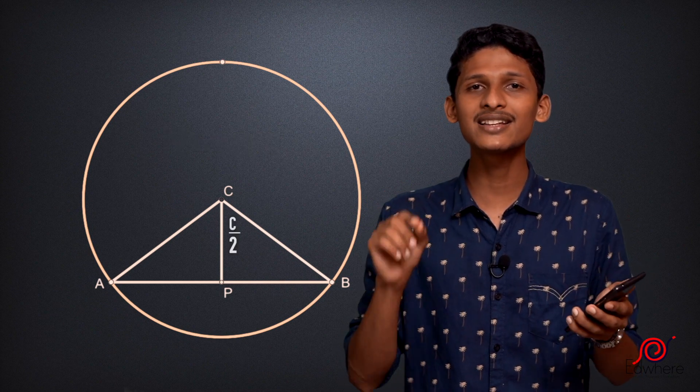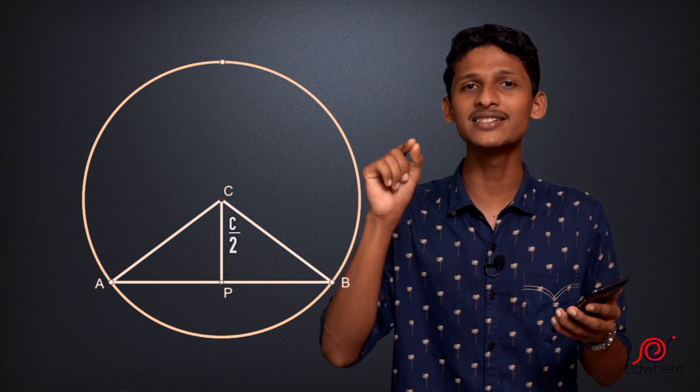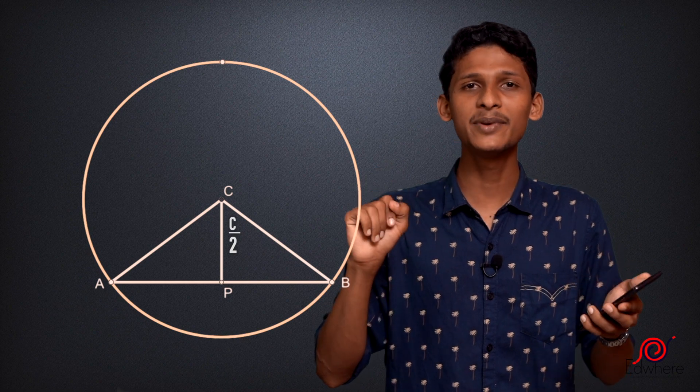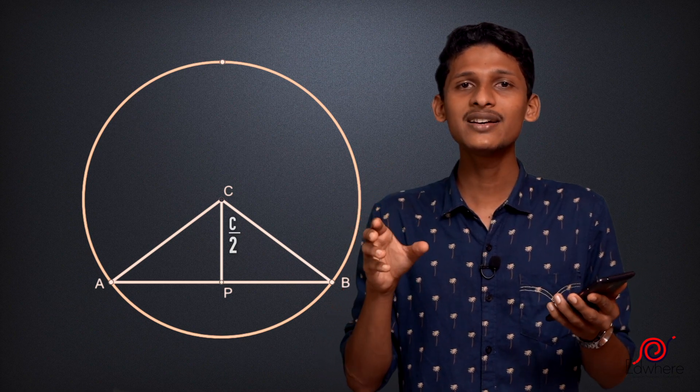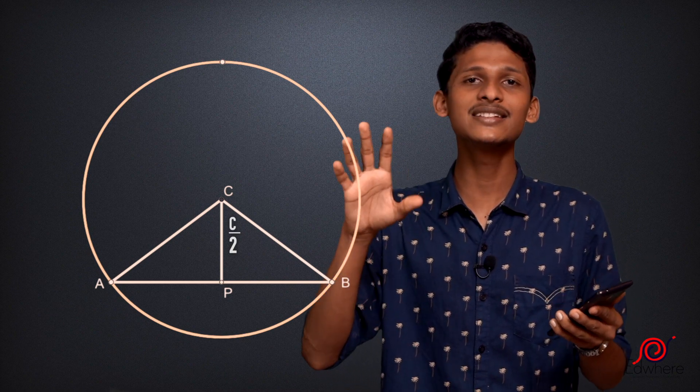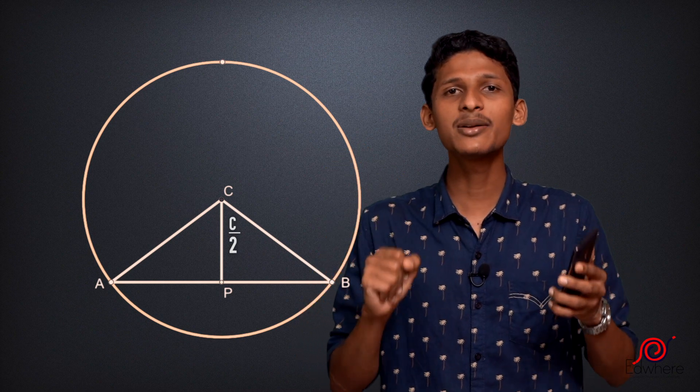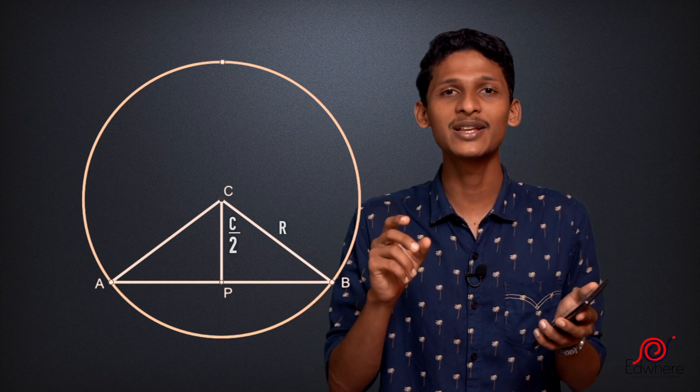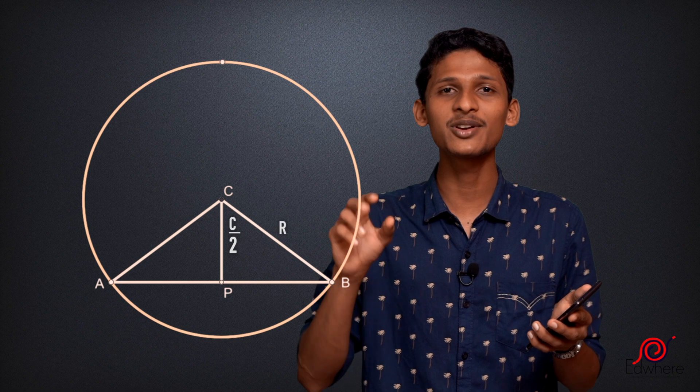What is the central angle ACB? The angle C by 2 is angle PCB. You can see the triangle PCB. We have to call the radius R. The length of CB, the radius, is R.